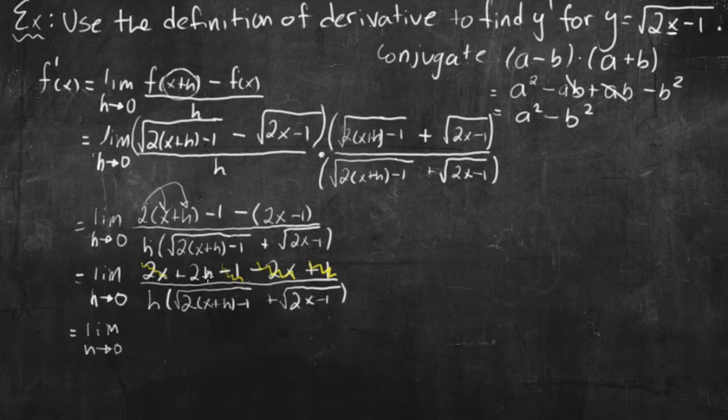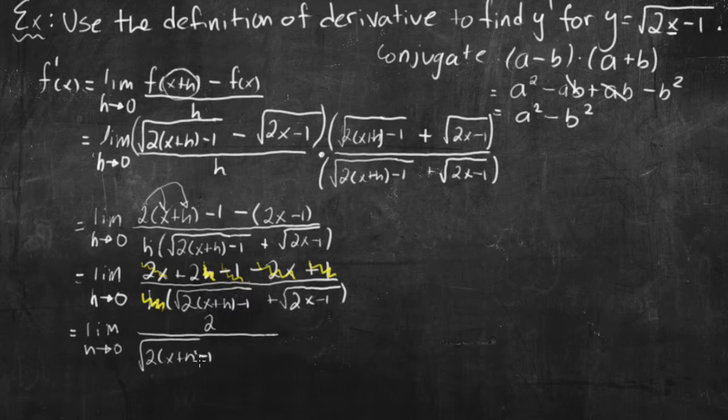So that is really nice. Because now what we have left is 2 over the square root of 2 times x plus h minus 1 plus square root of 2x minus 1. So now I can evaluate my limit.